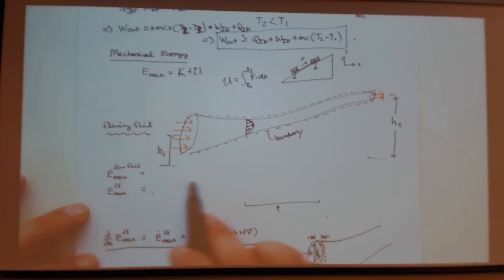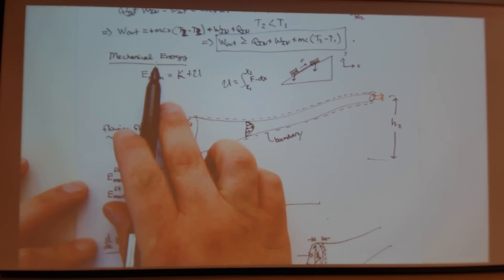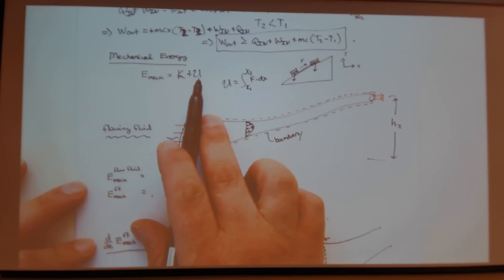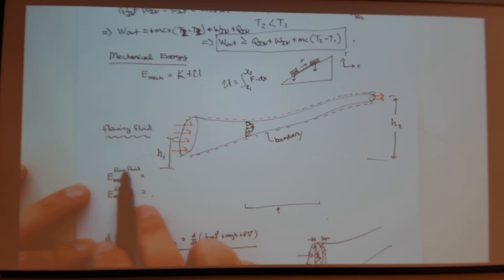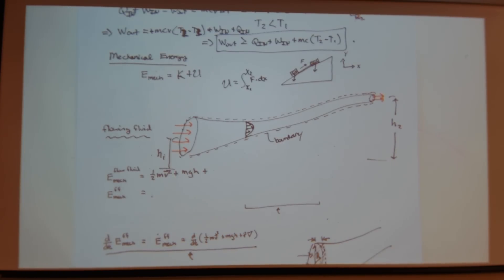So let's do a full energy expression for a flowing fluid. Now remember, there's mechanical energy, which is kinetic plus potential. So I'm going to be writing out the mechanical energy associated with a flowing fluid. So I have one part, which is this kinetic part, one half mv squared. Plus I have a potential part, mgh. Plus I have another type of potential part, which I call pressure volume, pressure times the volume.